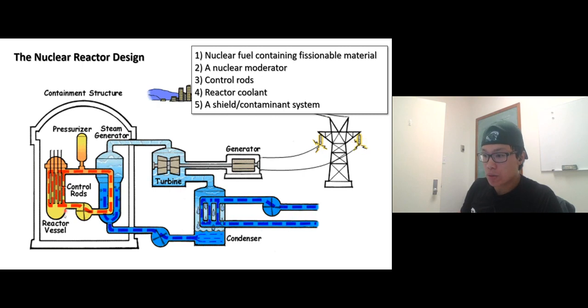Control rods are in here. Reactor coolant - because every time a nuclear reaction happens, the whole system gets hotter and hotter, so we have to cool it down using water.